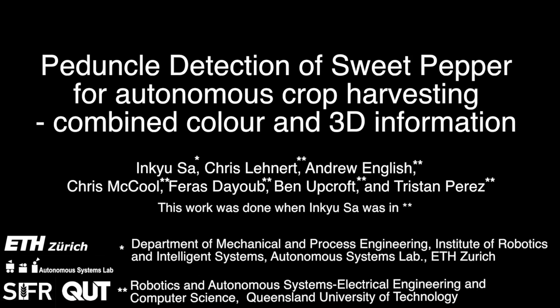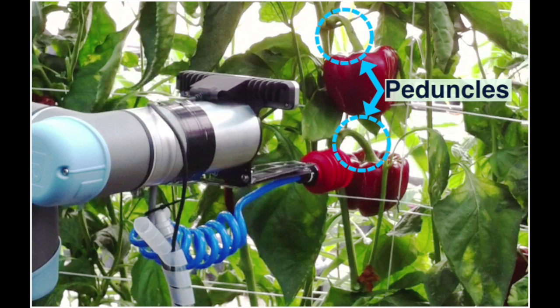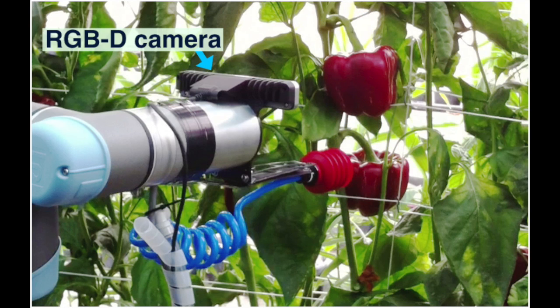We present peduncle detection of sweet pepper using color and 3D geometrical features for autonomous crop harvesting. The peduncle is the part of the crop that attaches it to the main stem of the plant. Accurate peduncle detection in 3D space is a key step in reliable autonomous harvesting of sweet peppers, since this is the cutting spot. In this paper we utilize reconstructed 3D sweet pepper and peduncle models using an Intel RealSense RGBD camera and KinectFusion software package.